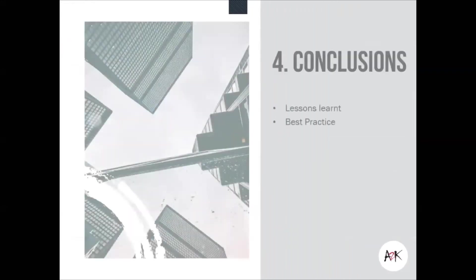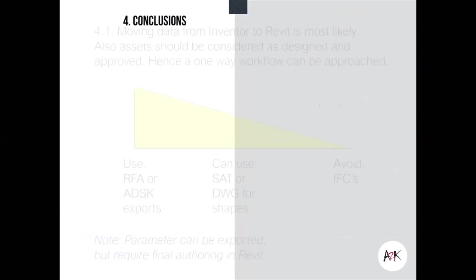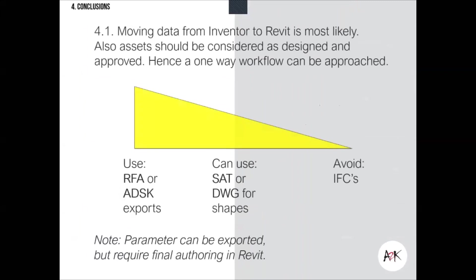So what are the conclusions and lessons learned? Moving data from Inventor to Revit is probably the most common direction from experience. However, if assets are still in design, we don't want to rely on reviewing the design in Revit. In that case, consider going from Revit to Inventor first — use a composite file to share the environment and boundaries so the part will actually fit.